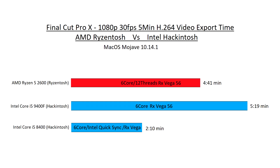Now comparing both results to the Intel i5-8400 hackintosh — it's also 6 cores with no hyperthreading like the 9400F, but it does have Intel UHD 630 graphics. That means we can take advantage of Intel QuickSync along with the RX Vega 56, utilizing both compute resources. The render time was just 2 minutes and 10 seconds. As you can see, Intel QuickSync makes a huge performance difference if you're using iMovie or Final Cut Pro. That's it for this video — leave questions in the comments and I'll see you next time.